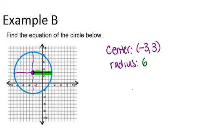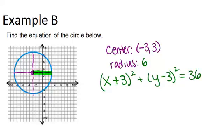Now once you have those pieces of information, you can write your equation. It's going to be x plus 3 squared plus y minus 3 squared equals 36. Now where did all that come from?